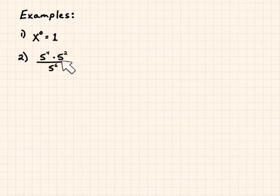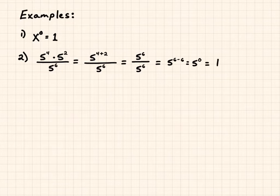5 to the fourth times 5 squared, all divided by 5 to the sixth. Because of our product of powers property, we get 5 to the sixth over 5 to the sixth. And that becomes 5 to the zero, which is 1.